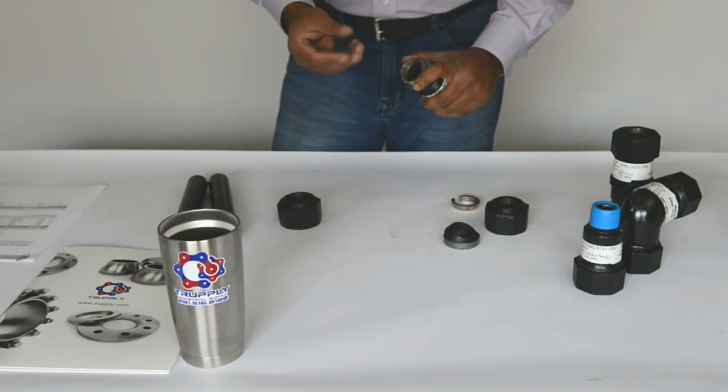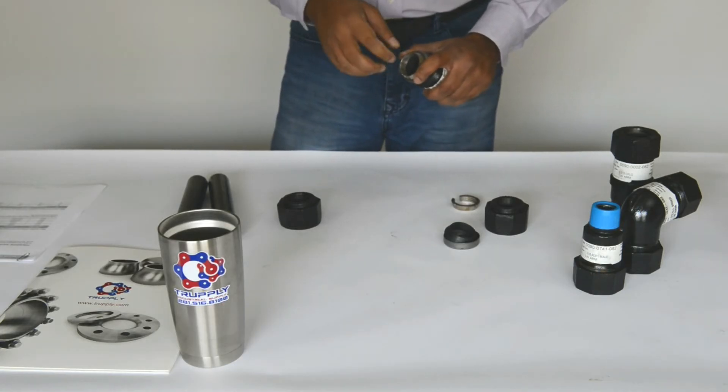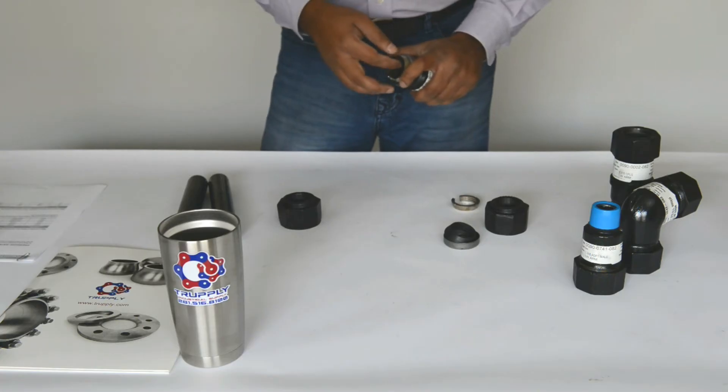if you're using it on a PVC pipe or a PE pipe, then the rigidity of the pipe is also important because this thing will really clamp onto it.